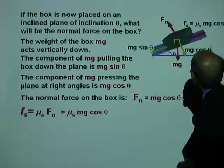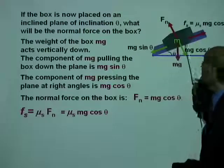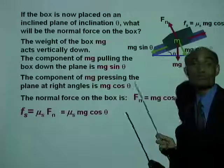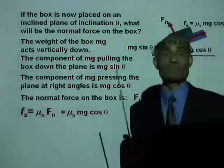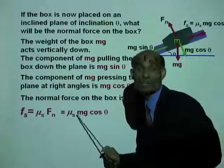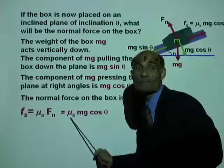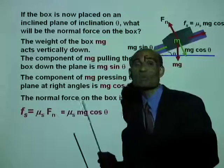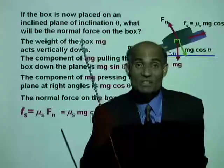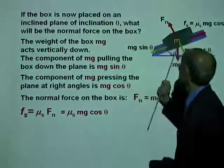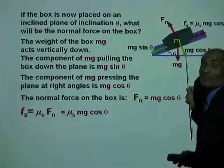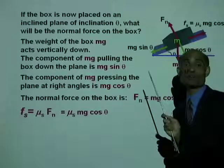Fn equals mu S times mg cos theta, and it is this force that will oppose the motion. This is something that you must be able to recall in solving problems. What does mu S times mg cos theta represent? The force of static friction between two surfaces that are inclined at an angle theta with the horizontal.